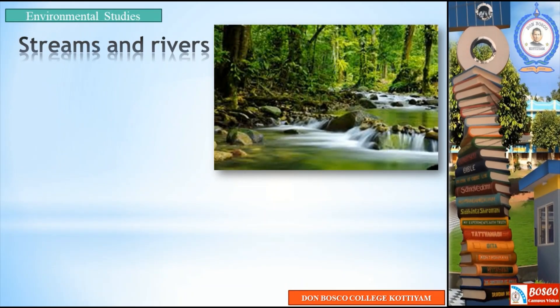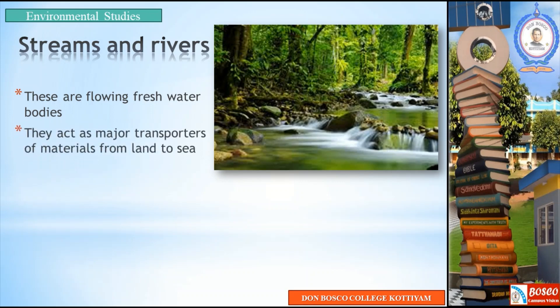Another type of aquatic ecosystem which comes under the running water ecosystem is streams and rivers. These are flowing freshwater bodies. They act as major transporters of material from land to sea.